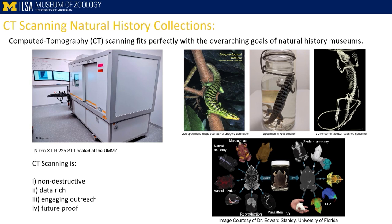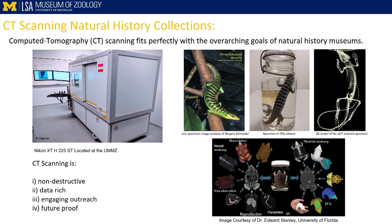This is where CT scanning comes in, and I think CT scanning fits perfectly with the overarching goals of a natural history museum. The primary reason is that CT scanning is non-destructive. This allows us to collect all kinds of morphological data about the specimens in our collection without having to cut into them, dissect them, or skeletonize them. We can literally keep a specimen in its jar, in as close to the condition it would have existed in life as possible.